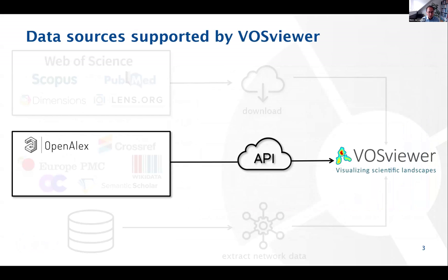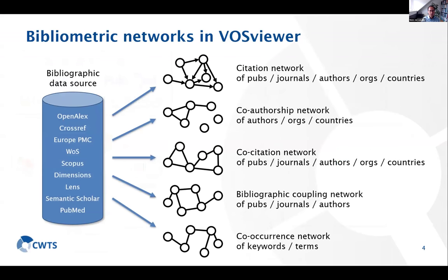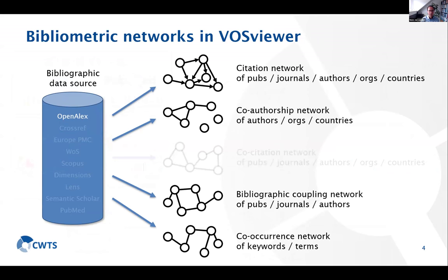For OpenAlex, we have implemented a direct connection between OpenAlex and VOSviewer, making use of the API provided by OpenAlex. In VOSviewer, different types of networks can be extracted from bibliographic data. We have support for citation networks, helpful for seeing connections between papers or journals. We have co-authorship networks to study how authors and organizations collaborate, bibliographic coupling networks, and co-occurrence networks of keywords and terms extracted from titles and abstracts.